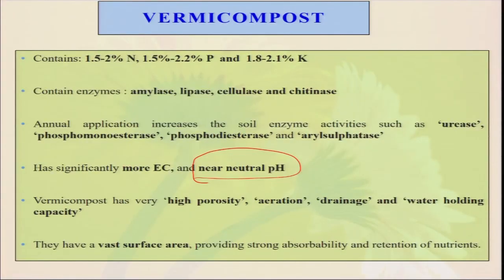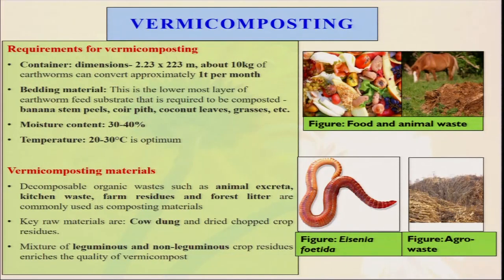Vermicompost has high porosity — because porousness and high surface area are there, it also helps in aeration, drainage, and water holding capacity of the soil. If you are growing a crop in winter season with no rain and limited irrigation, continuous application of vermicompost will enhance the water holding capacity so your crop can take sufficient moisture without giving extra irrigation, resulting in better yield and more profit. Requirements for the vermicomposting process include a container — a plastic sheet, brick structure, concrete pit, or heap. Bedding materials like banana stem peel, coconut leaf, grasses are used. Moisture content must be maintained at minimum 30 to 40 percent, otherwise earthworms will dry out and the decomposition process will be slower.